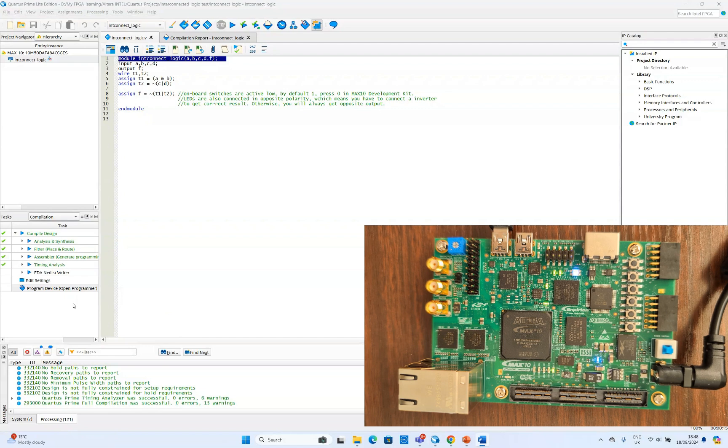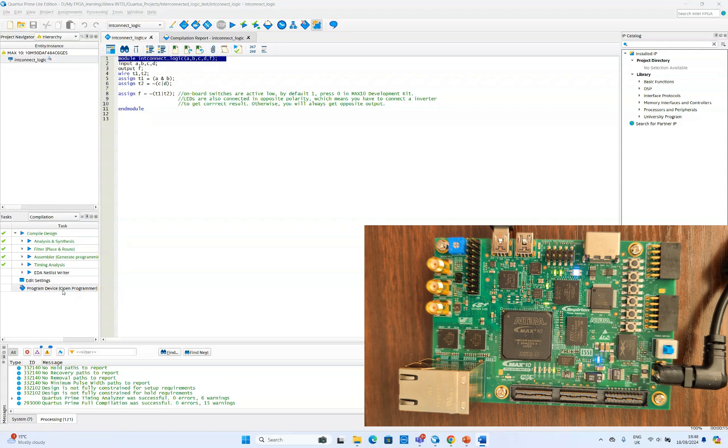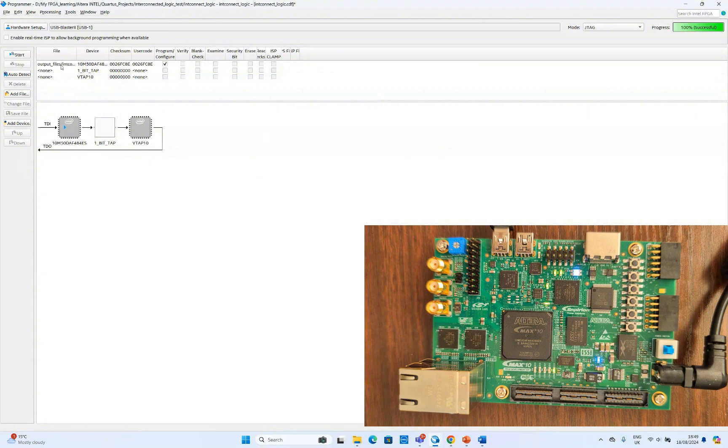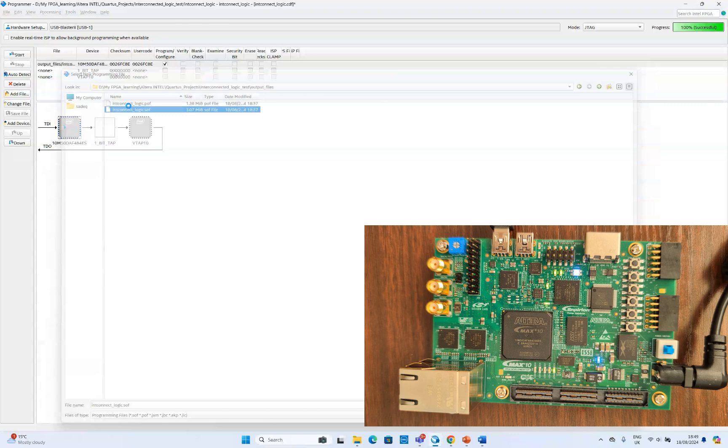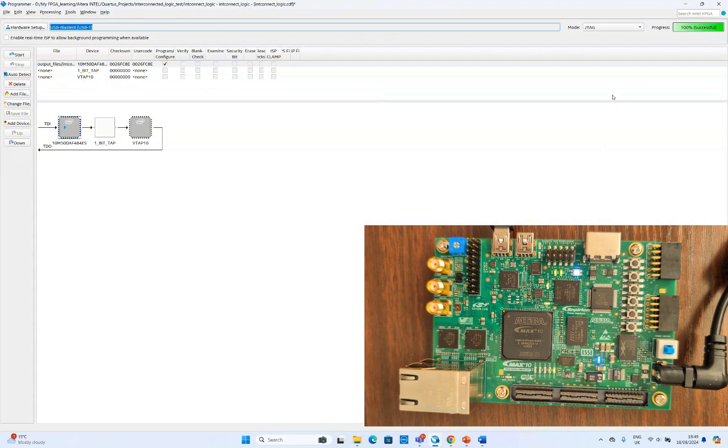Now we will program the Max 10 development kit. So to do that we will double click the program device and it will open the programmer. And you can also see the Max 10 development kit in the sub window. So we already configured the programmer to do the programming in the Max 10 development kit. So if you select the files and we can upload the SOF file and then we have to click the program button. And then if we click start, you can see the program is loaded successfully now.